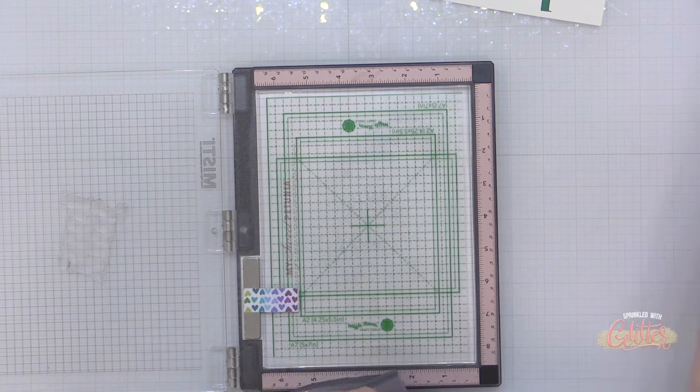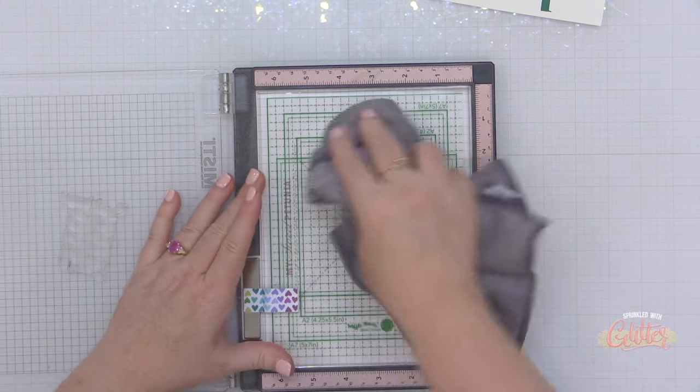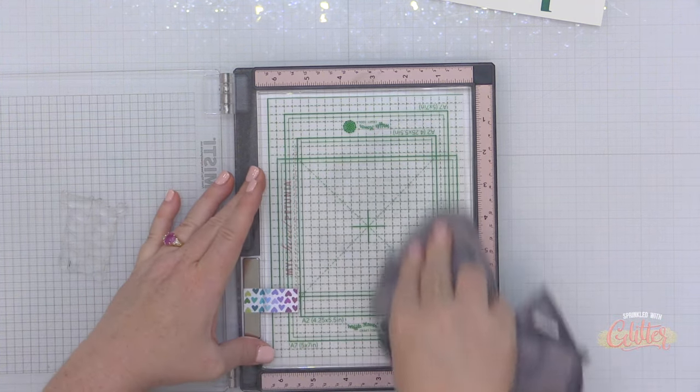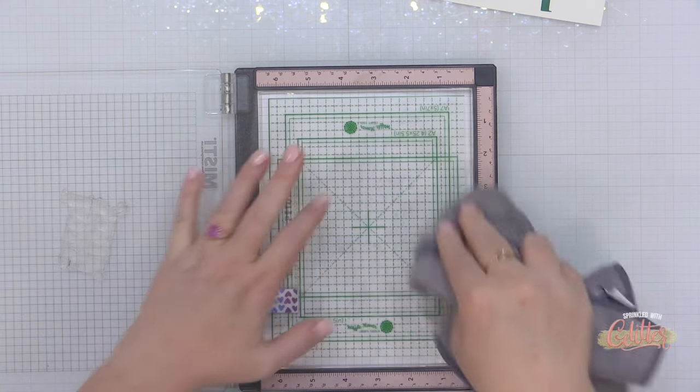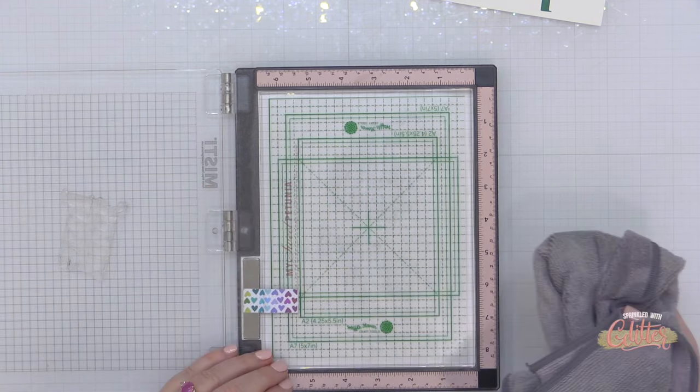I use these a lot for ink blending as well. Now when it gets a little dusty or loses its tack I just use some stamp cleaner and a microfiber cloth and clean it down and then it's restuck.